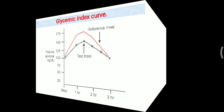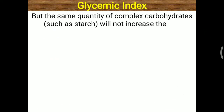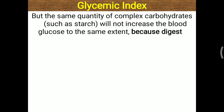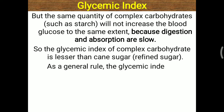The same quantity of complex carbohydrate will not increase blood glucose to the same extent because digestion and absorption are slowed down. Any complex molecule takes more time in the intestine to be digested and converted into glucose, so the sudden rise of glucose is avoidable. The glycemic index of complex carbohydrates is lesser compared to canned sugar, which is made mostly of sucrose and glucose molecules. Refined sugar has the highest glycemic index.